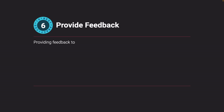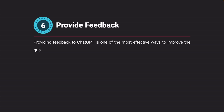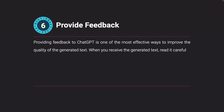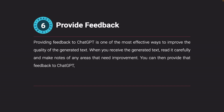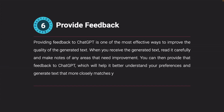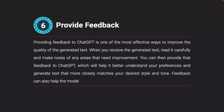Provide feedback. Providing feedback to ChatGPT is one of the most effective ways to improve the quality of the generated text. When you receive the generated text, read it carefully and make notes of any areas that need improvement. You can then provide that feedback to ChatGPT, which will help it better understand your preferences and generate text that more closely matches your desired style and tone. Feedback can also help the model improve its overall performance.